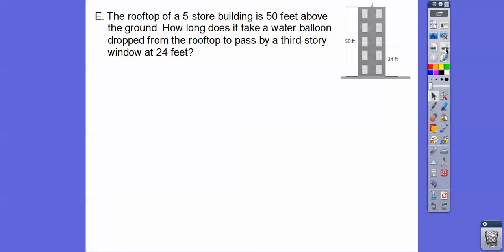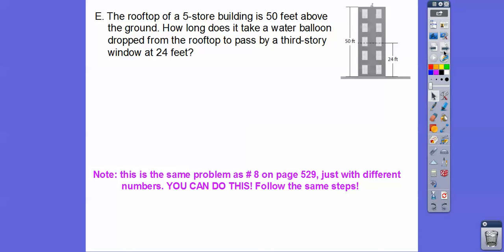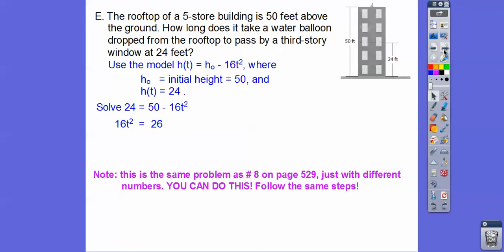So here's another one here. So the rooftop of a 5-story building is 50 feet above the ground. So here's our initial height. So we're going to use that other formula, h sub 0 minus 16 t squared. So how long does it take a water balloon dropped from that rooftop to pass by a 3rd-story window? So here's a 3rd-story window at 24 feet high. So we're going to use, and this is just like your number 8 on your assignment here. We're going to use the model h(t) equals h sub 0 minus 16 t squared, where h sub 0 is the initial height at that 50 feet. And we want to know when is it going to pass the height of 24 feet. So h(t) equals 24. So we're going to solve that equation. So let's subtract 50. Oh, what did I do? No, I didn't. I did this. I did plus 16 t squared and put it over here because I like to do it positive. Your book actually subtracted 50, and they had you deal with the negatives. I didn't want to do that. So anyways, and then now we're going to divide both sides by 16 right there.